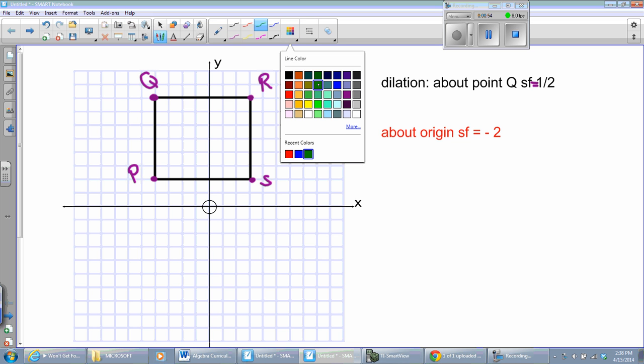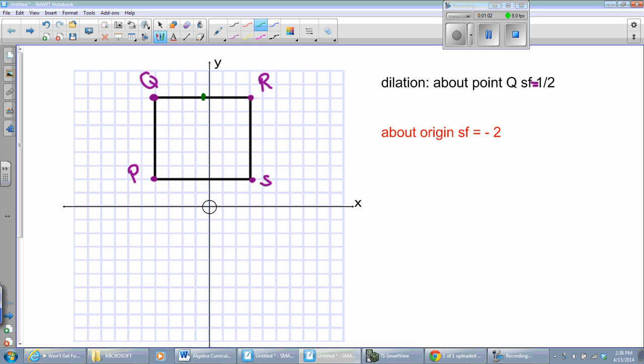point Q is not moving. All I'm going to do is I'm going to count how long is QR. Well, QR appears to be one, two, three, four, five, six, seven. Half of seven is three-and-a-half, so one, two, three-and-a-half. There we go.